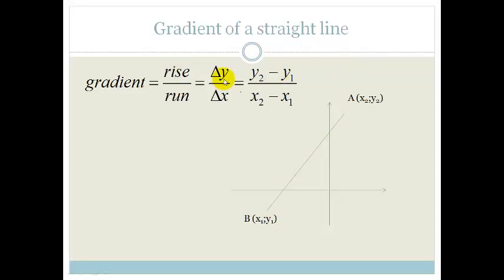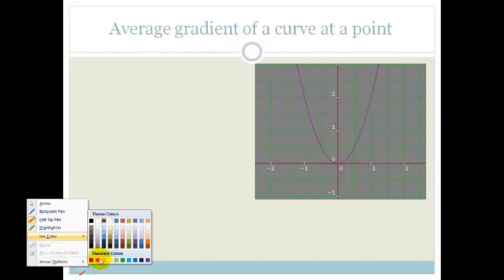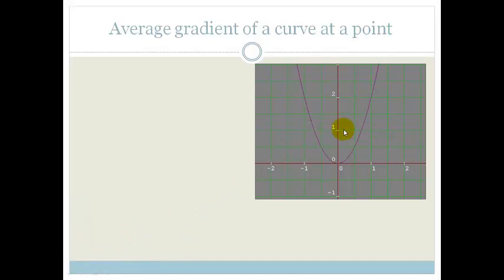But let's say we are given a curve. Now we want to find the average gradient of a curve at a point. So first thing I'm going to do is, I've just realized my color is all wrong, so let's change it to red. Let's say I want to find the gradient at this point here.